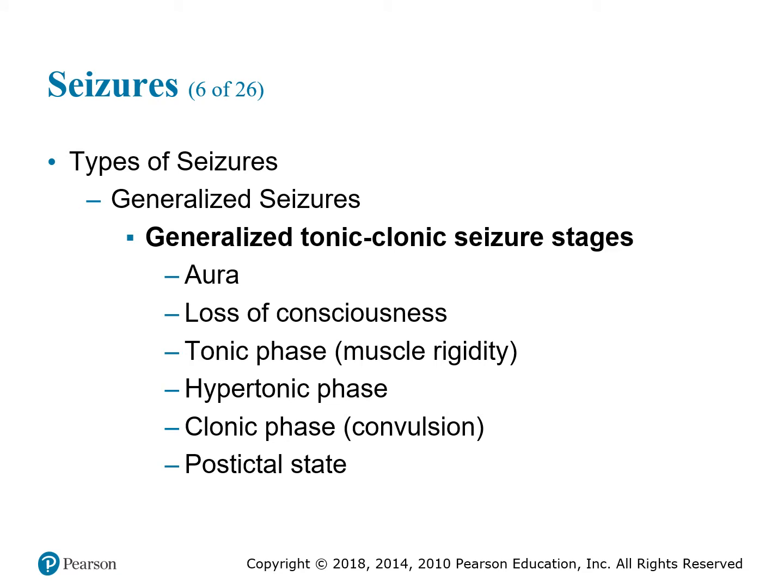With generalized tonic-clonic seizures, we have different stages. The aura precedes the seizure activity and can be different for different people. Patients may even know a seizure is coming because of the aura — they might taste pennies, see spots, or smell an unusual odor. They can predict it based on this aura — something that happens prior to the seizure that lets them know it's coming.